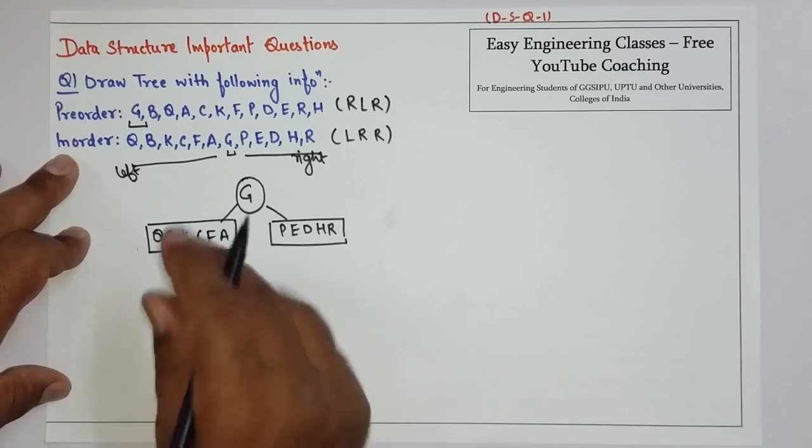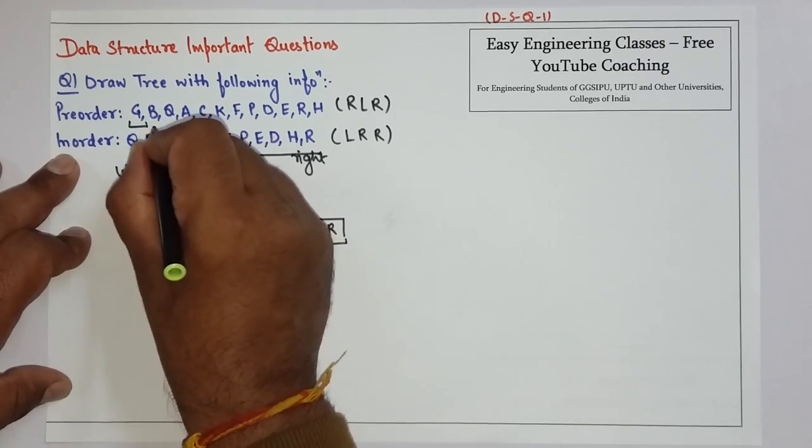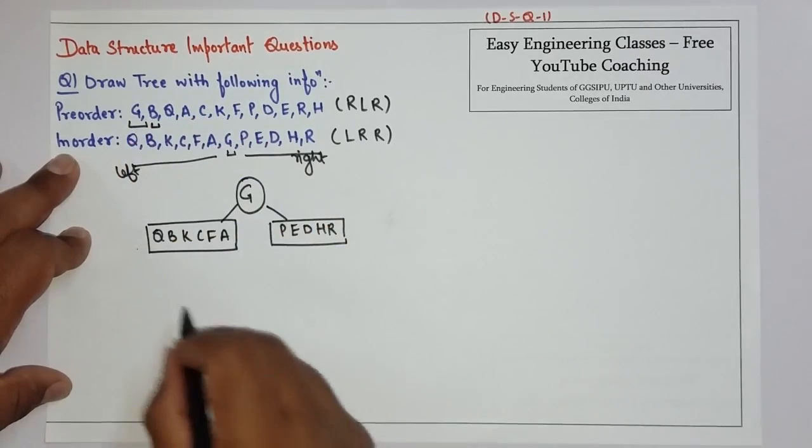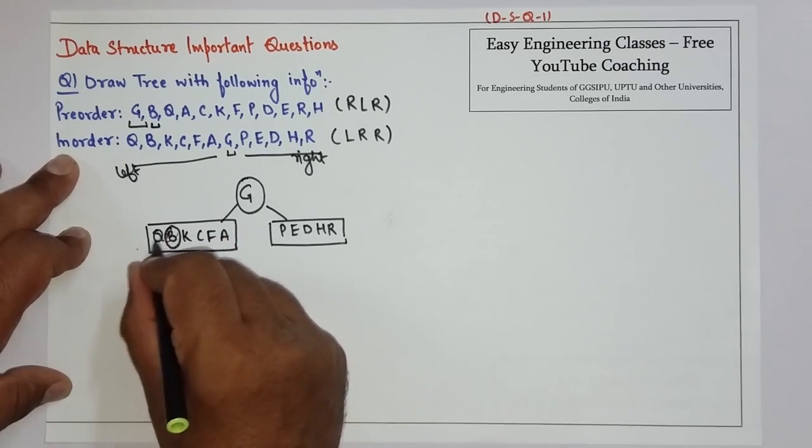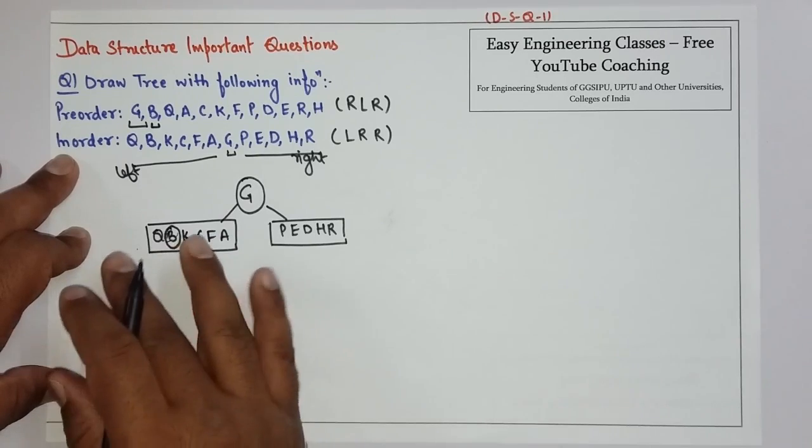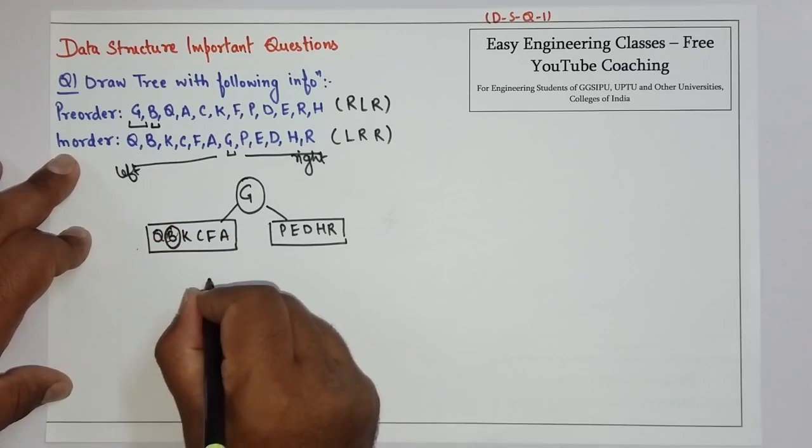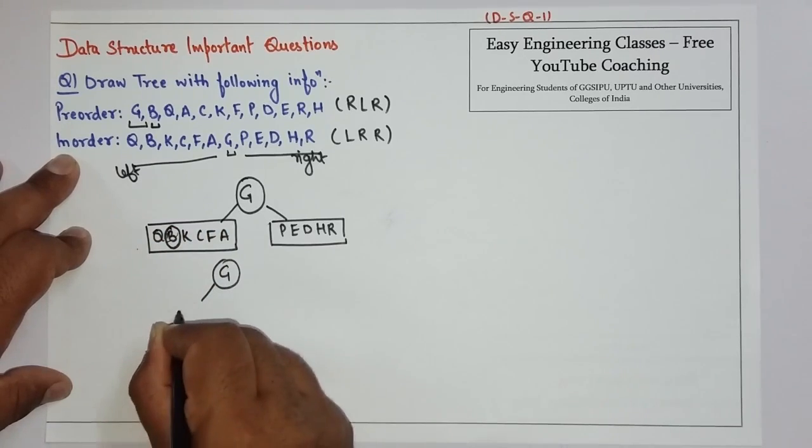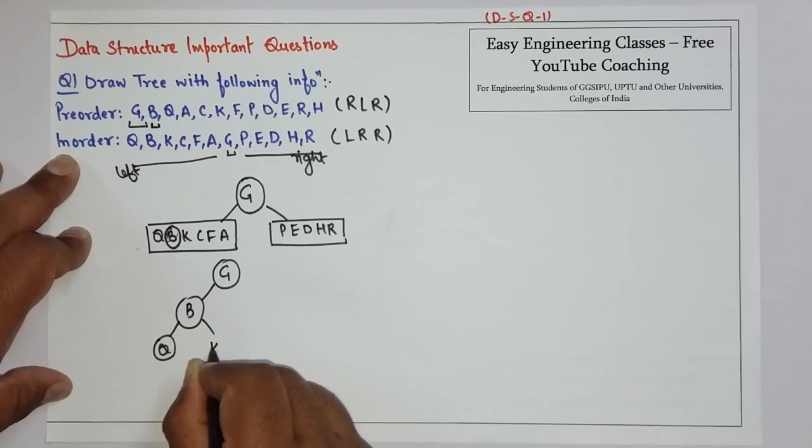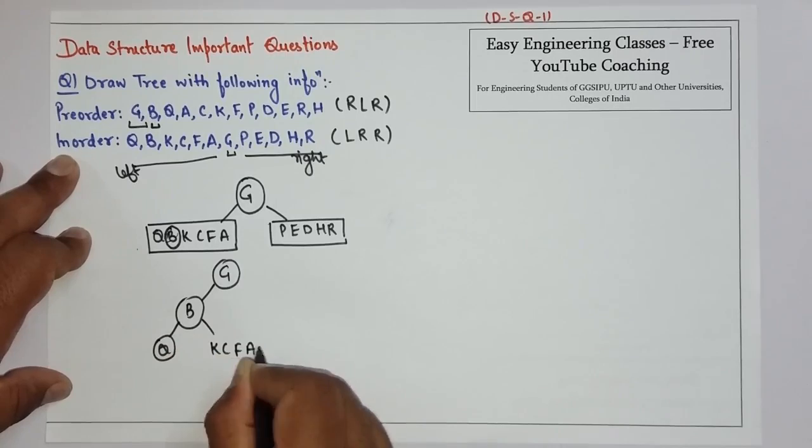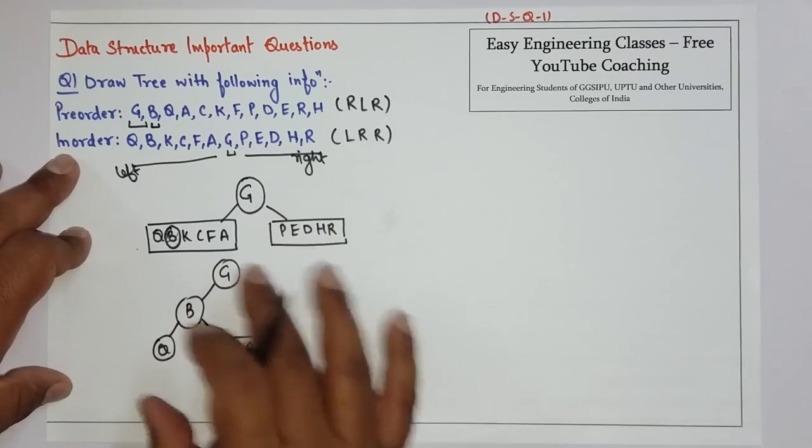Then consider this particular left subtree. The next is B. That means B is the root. All elements to the left of B are part of the left subtree and all elements to the right are part of the right subtree. In the second step this will look like this, and I am not touching the right part for the moment.